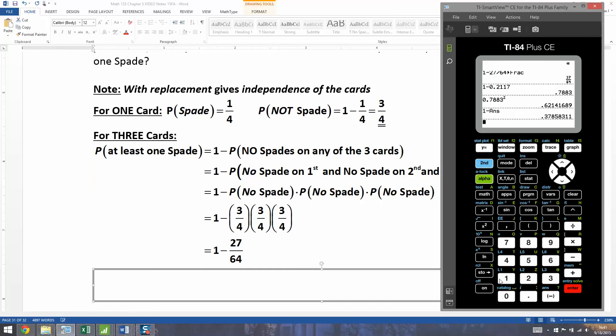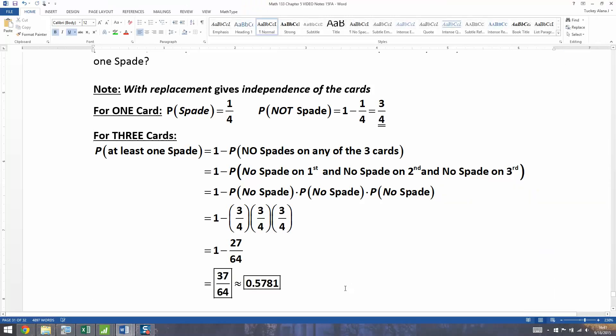So let me go back to my calculator here. One minus 27 divided by 64 is that in a decimal. And if I press math one, there it is in a fraction. So let me grab this. And there's our results.